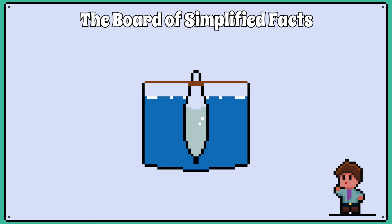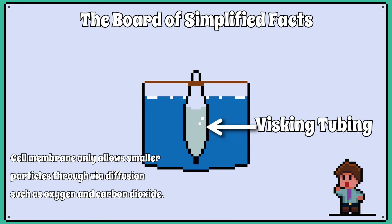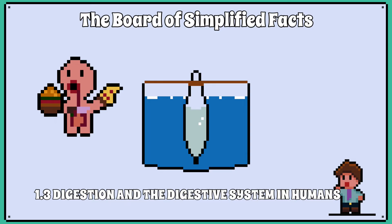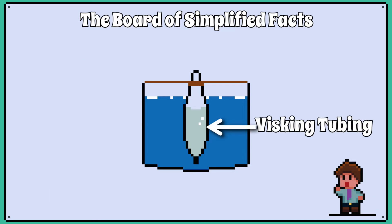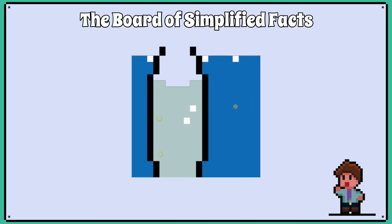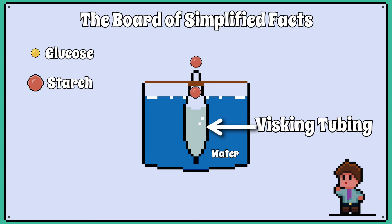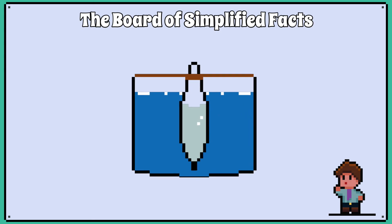A practical experiment using visking tubing can also demonstrate how the cell membrane only allows smaller particles through via diffusion. We will revisit this experiment in more detail in the 1.3 topic on digestion. But simply, if you surround the visking tubing with water and place glucose, a small molecule, inside the visking tubing, the glucose will diffuse out into the surrounding water because the glucose particles can fit through the small pores of the visking tubing. If you put starch, a large molecule, inside the visking tubing, you will see no starch in the surrounding water because starch molecules are too big to fit through the pores of the visking tubing.